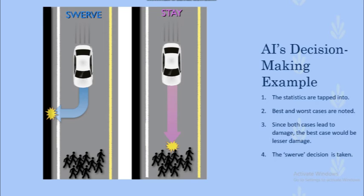Here's a proper example of AI. The AI sees two possible outcomes of a particular action: either to swerve and destroy itself, or to harm multiple individuals. First, the statistics are analyzed — the damages, pros and cons of both scenarios. Next, the best and worst cases are noted. It could destroy itself over harming multiple individuals. Since both cases lead to damage, the best case would be lesser damage, which is to destroy itself over harming multiple individuals. Hence, the swerve decision is taken.